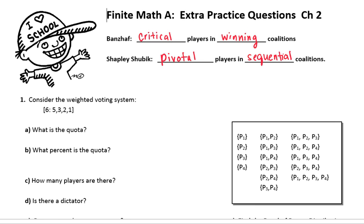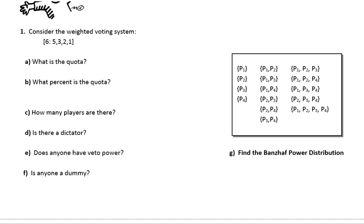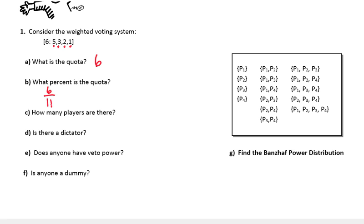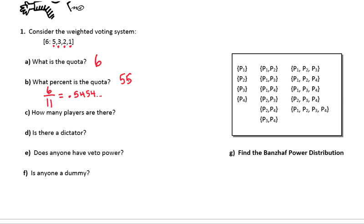Let's talk about this first weighted voting system. Example 1: Consider the weighted voting system [6: 5, 3, 2, 1]. The quota is always the first number in front of the colon, so that is 6. What percent is the quota? A percent is the part out of the whole. The quota is 6 out of the total. Adding up everybody's votes: 5 + 3 + 2 + 1 gives 11 total votes. Taking 6 divided by 11 gives 0.54 repeating, so approximately 55%.